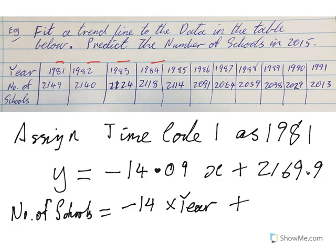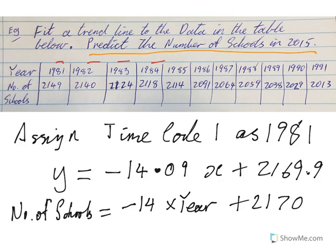Plus 2170 — we round that off. So the equation we're working with is: the number of schools equals negative 14 times the year plus 2170. The question we're asked is to predict the number of schools in 2015.